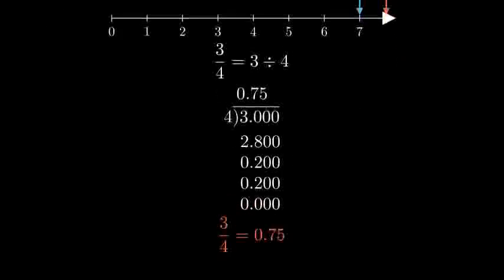3 divided by 4 equals 0.75. Now that we have converted the fraction to a decimal, we can add it to our whole number.